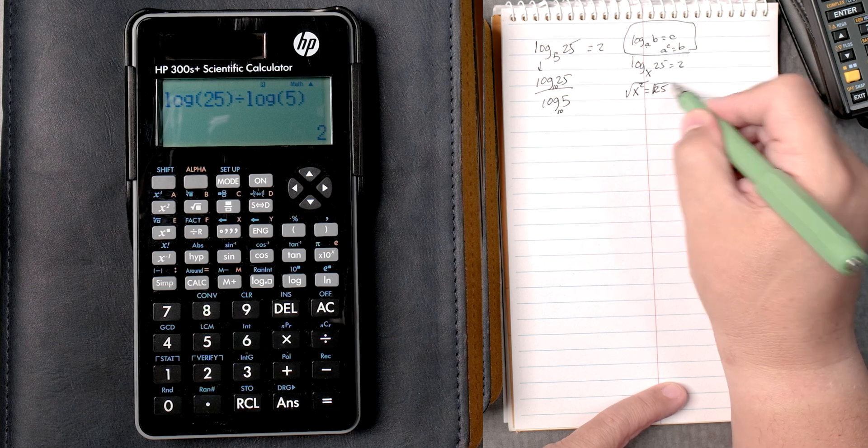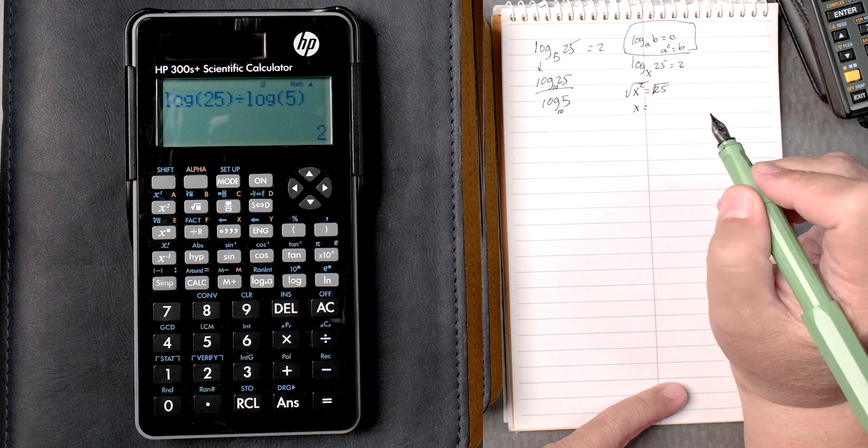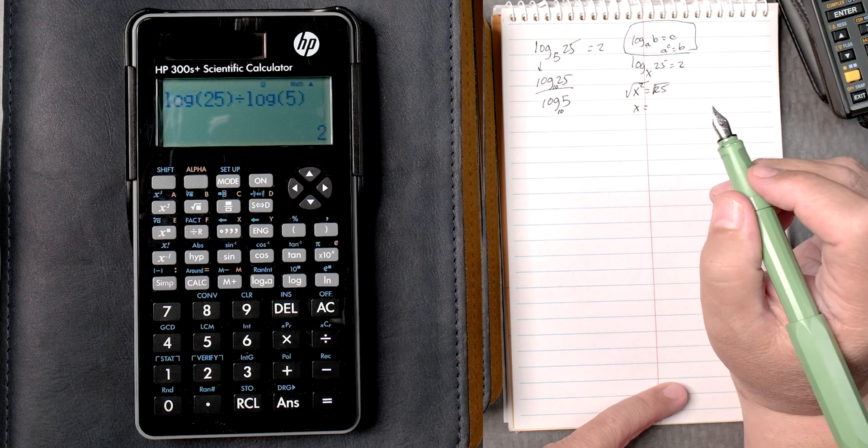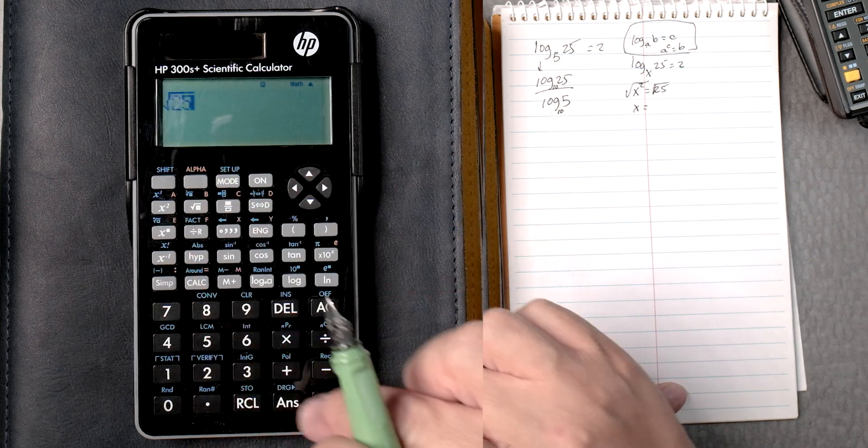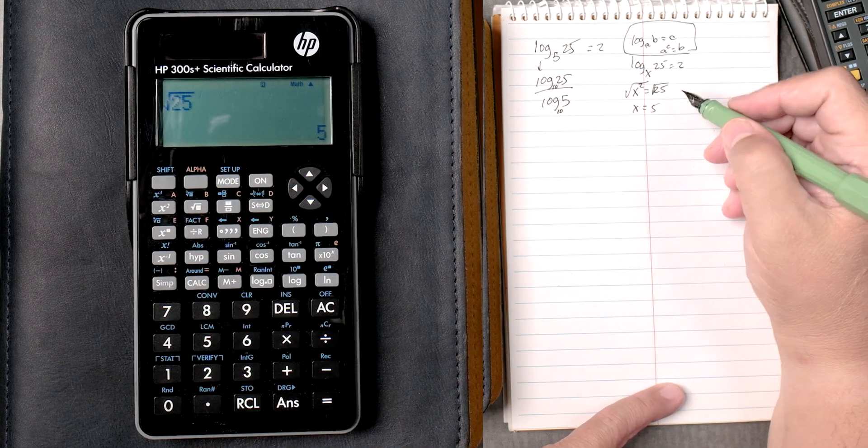Take the square root on both sides, x is equal to the square root of 25. So if you take the square root of 25 and you press equals, it gives you 5, perfect.